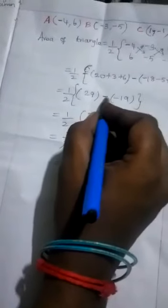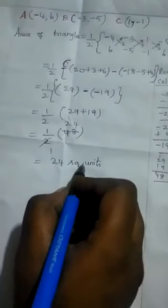The common mistake committed by students is the middle negative sign - sometimes they may forget to multiply it inside. You should be very careful while multiplying the negative sign. Writing the square unit is more important. We have now learned area of a triangle.